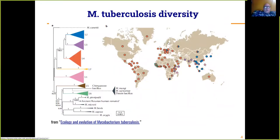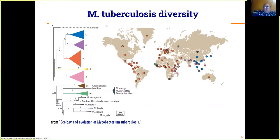Mycobacterium tuberculosis itself is a complex of — in this diagram, seven lineages, though eight are now recognized and a ninth has been proposed. This complex also includes some animal tuberculosis bacteria like Mycobacterium bovis and Mycobacterium pinnipedii. The modern tuberculous mycobacteria are lineages one, two, three, four, and seven, and the differences between them are largely due to so-called regions of deletion.